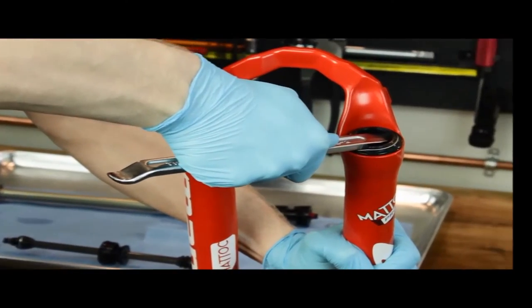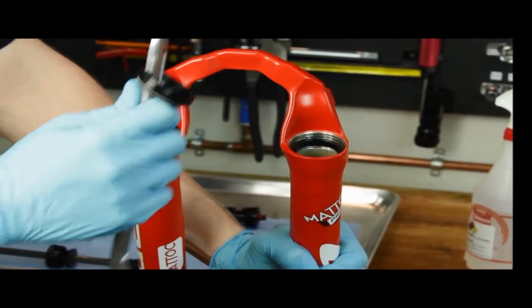Using a downhill tire lever, pry up the old dust seal that's been pressed into the outer casting.